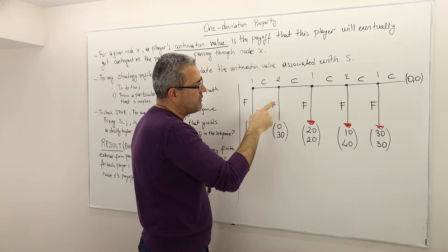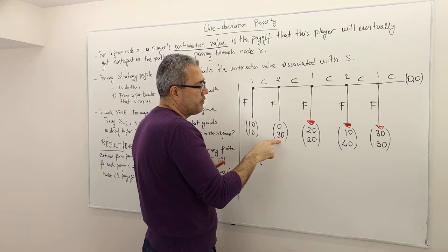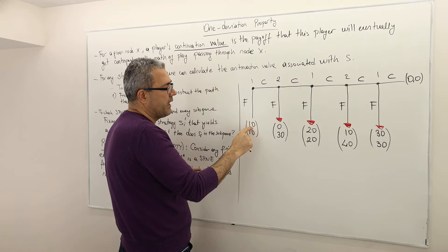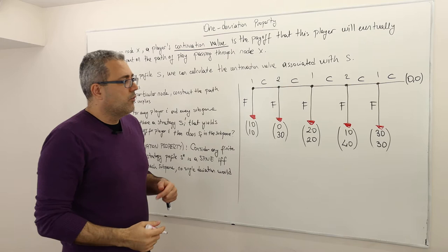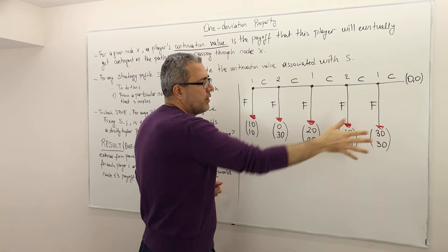Player two, knowing that if she chooses F she gets 30 but if she continues her opponent ends the game giving her only 20, prefers 30 and so finishes the game. At the initial decision node, player one knows that finishing gives him 10, while continuing means his opponent will finish anyway, leaving him with 0. So player one prefers to finish himself. All the arrows point to F, meaning the game ends immediately at the beginning and we never reach those subgames.